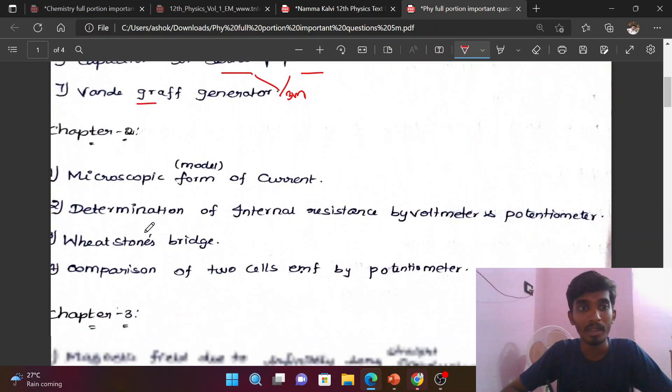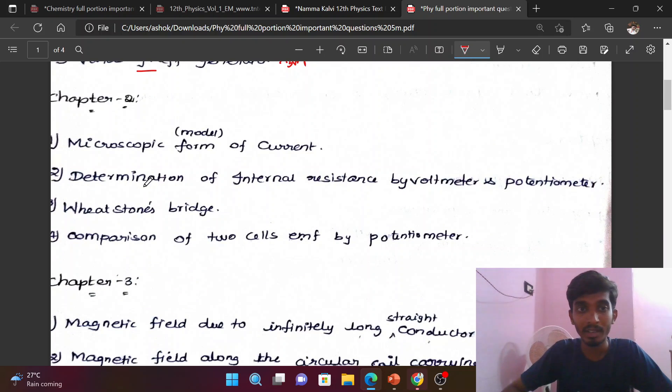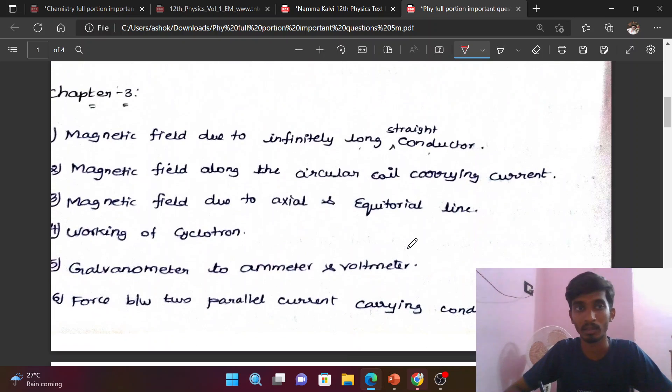Chapter 2: Microscopic model of current, determination of internal resistance by voltmeter and potentiometer. Both voltmeter and potentiometer methods are in the textbook. Wheatstone bridge is very important, and comparison of two cells EMF by potentiometer.